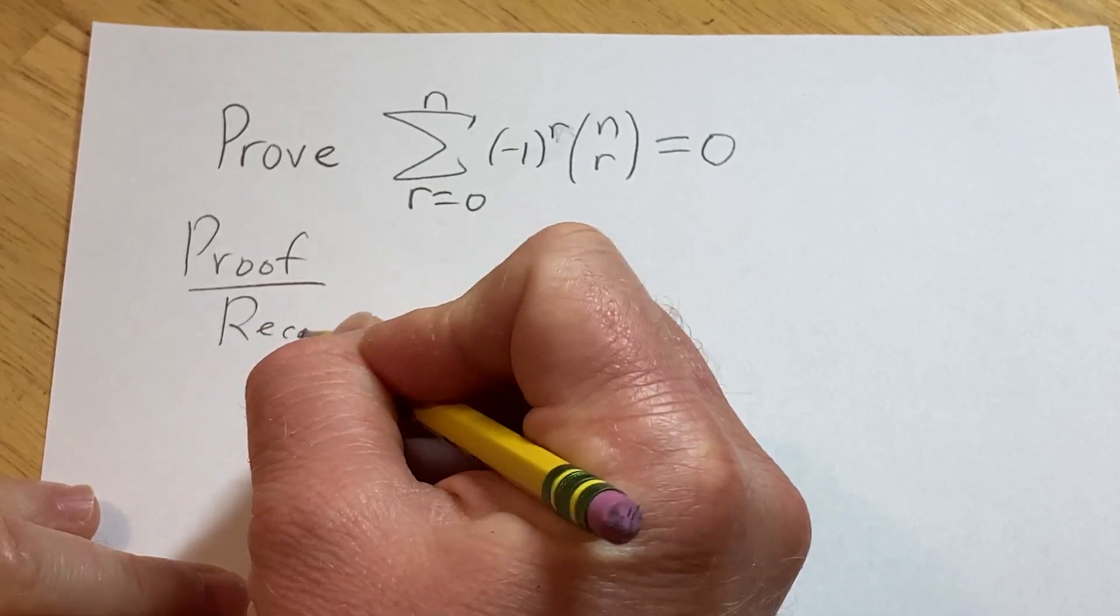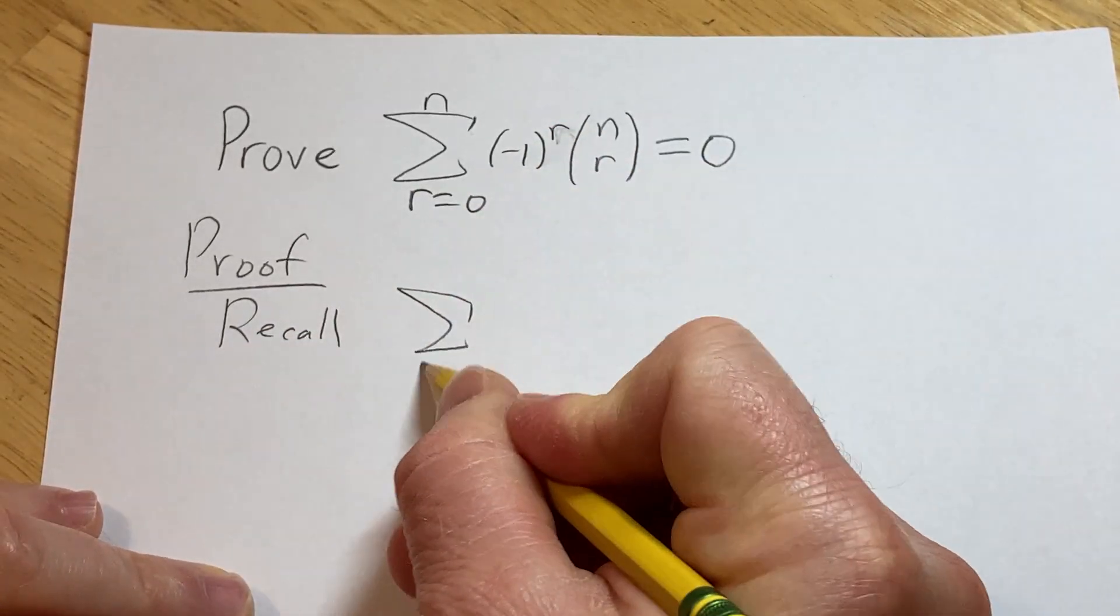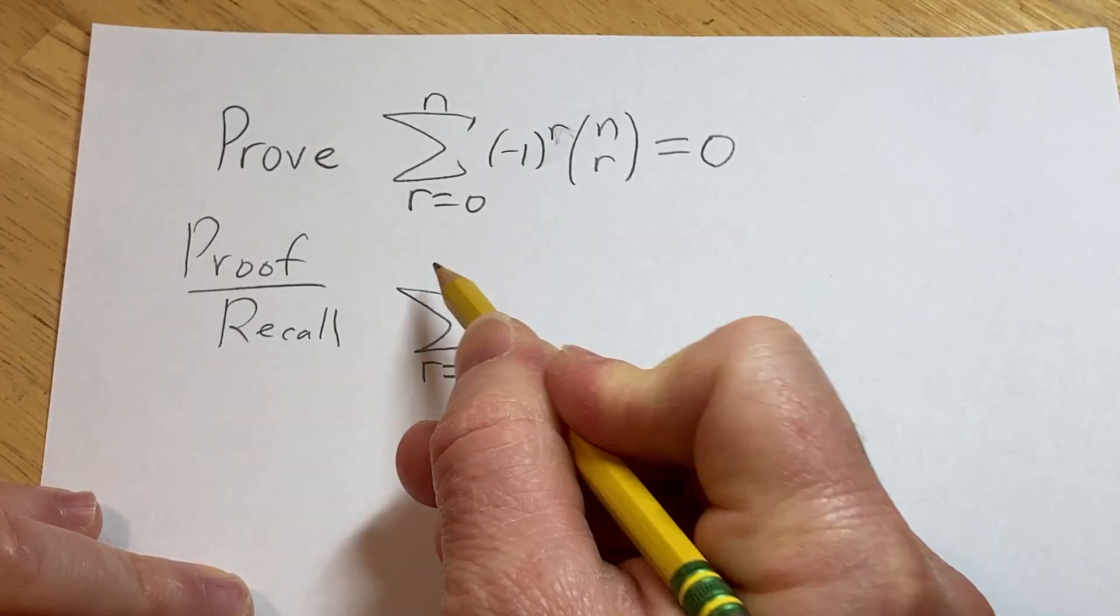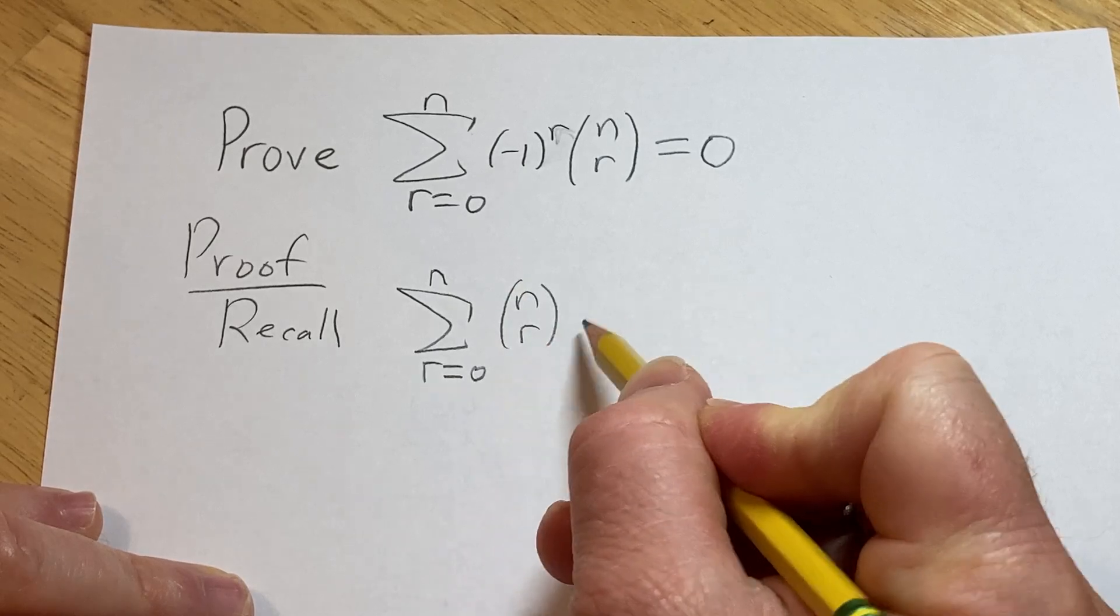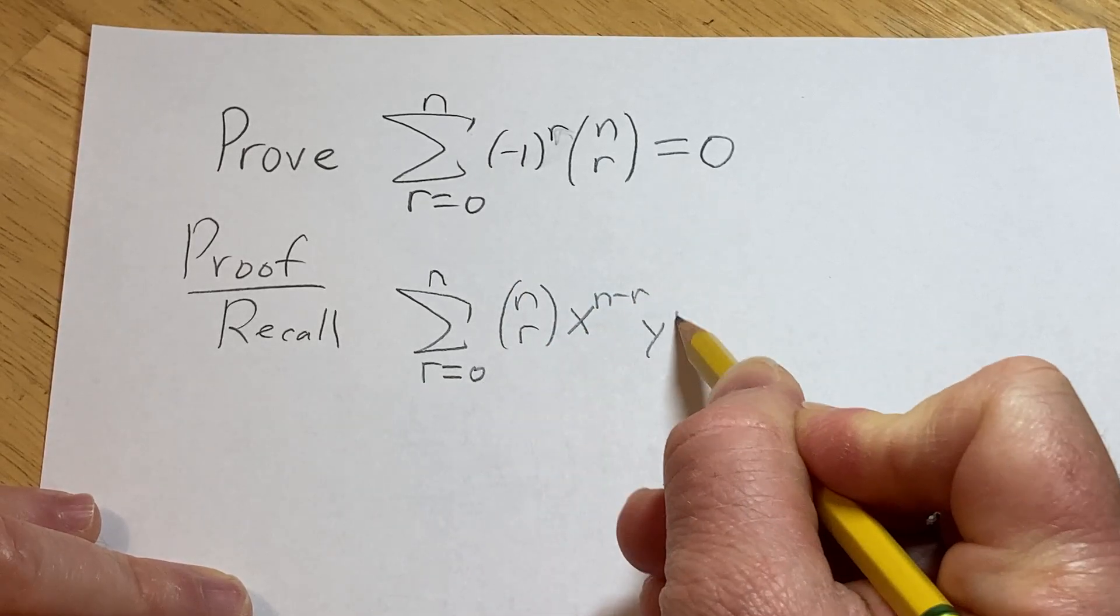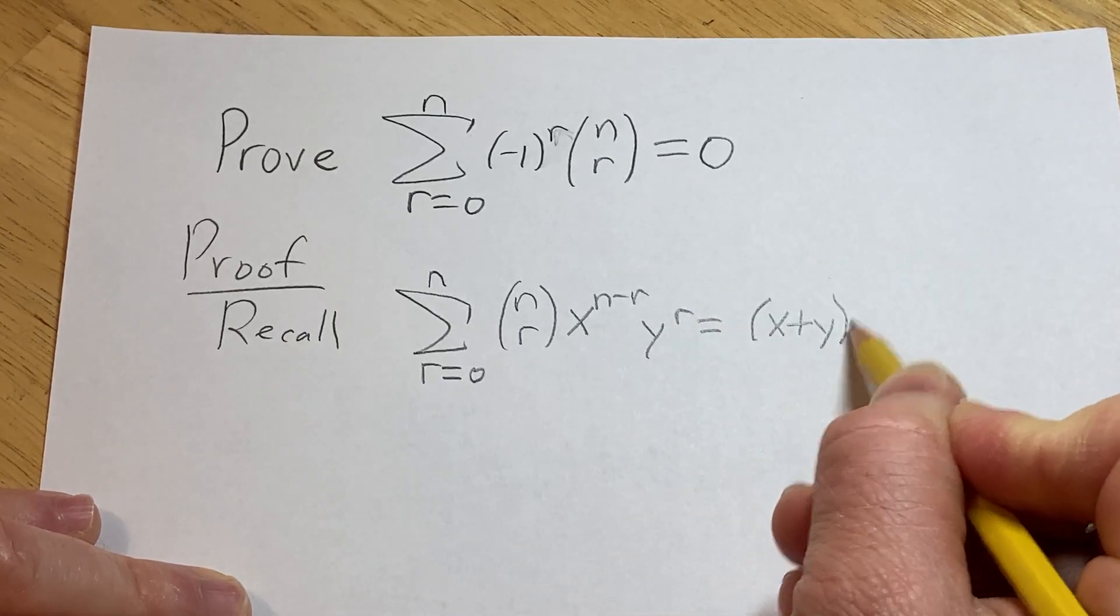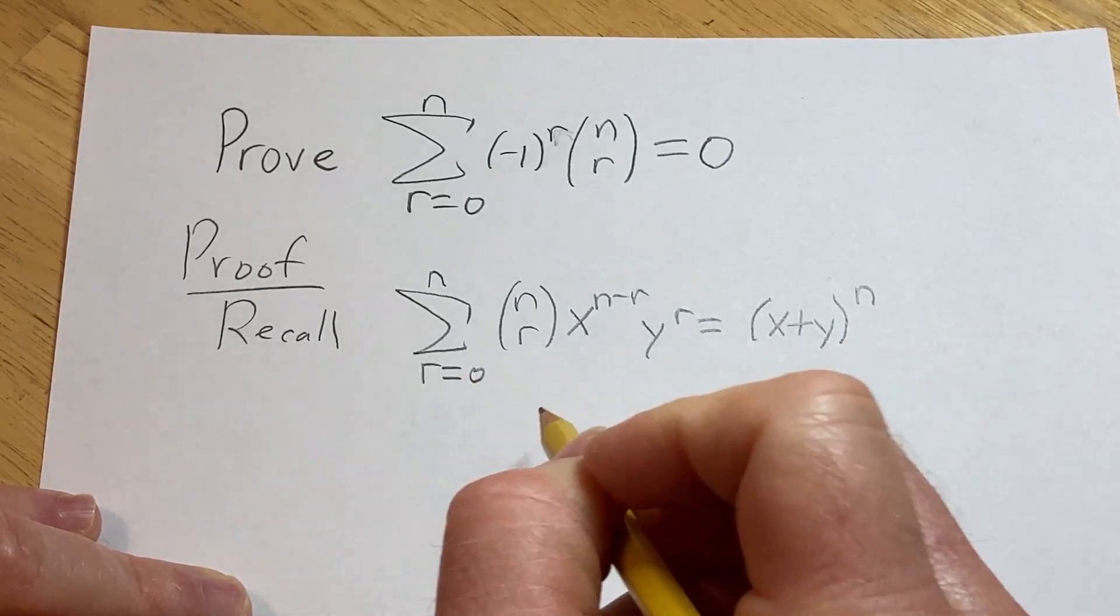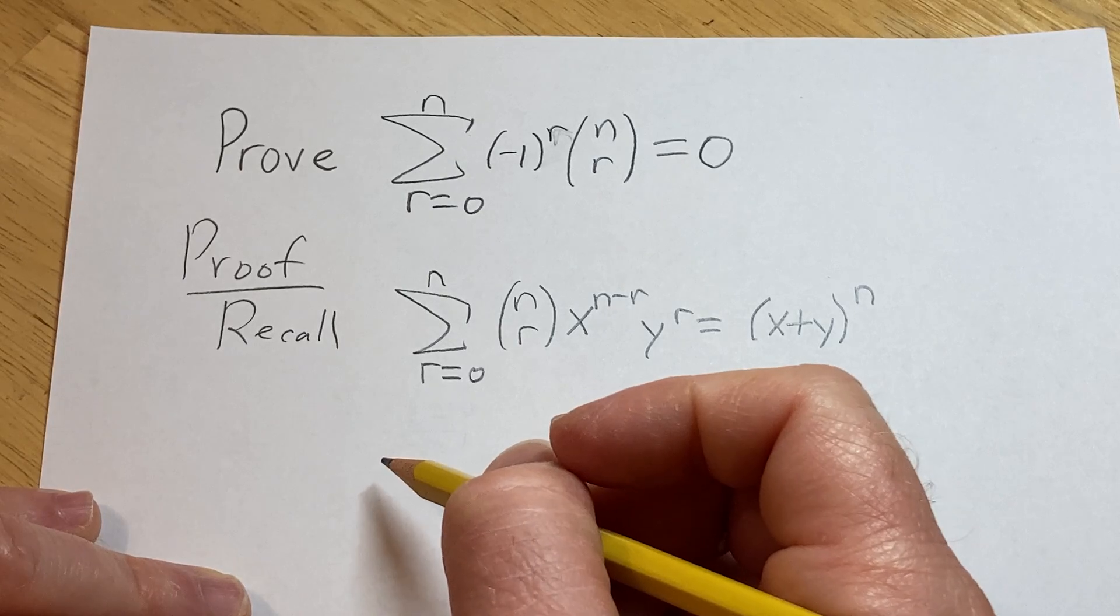So recall if you have the finite sum, as r runs from 0 to n, of n choose r times x to the n minus r times y to the r, this is equal to x plus y to the n. This is the binomial theorem, which is a very popular theorem in mathematics.